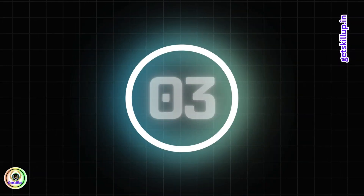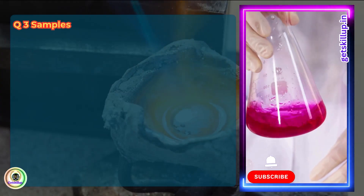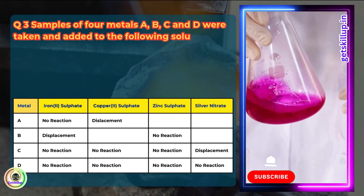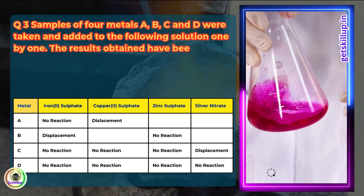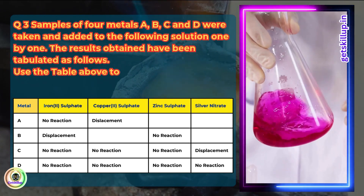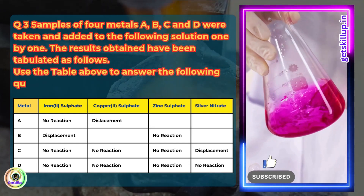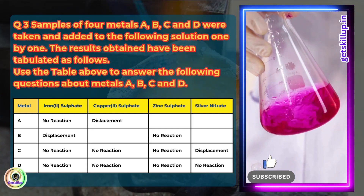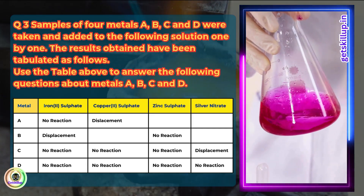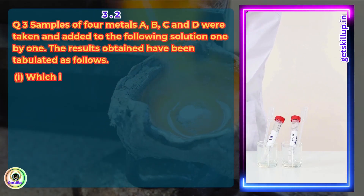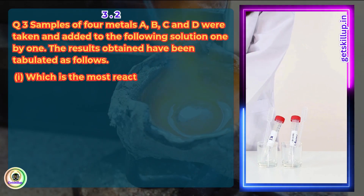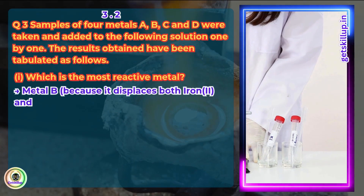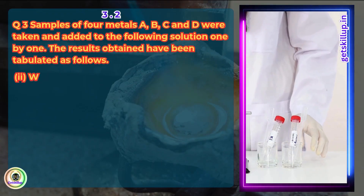Question 3. Samples of 4 metals A, B, C and D were taken and added to the following solutions one by one. The results obtained have been tabulated. Use the table to answer the following questions about metals A, B, C and D. Which is the most reactive metal? Answer: Metal B, because it displaces both iron and silver from their solutions.